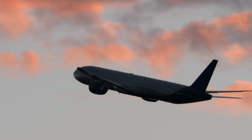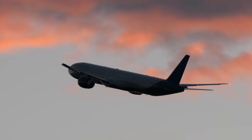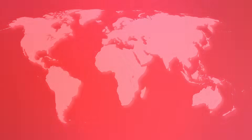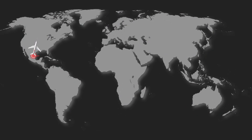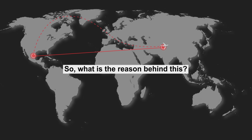Have you ever flown somewhere and seen the inflight map showing the curved route your airplane was taking? You might wonder why the plane would take the seemingly longer pathway to reach the destination instead of flying a straight line from the departing point to the destination airport. So, what is the reason behind this?